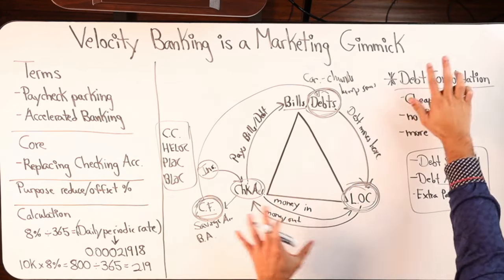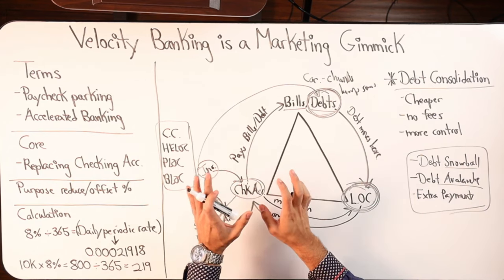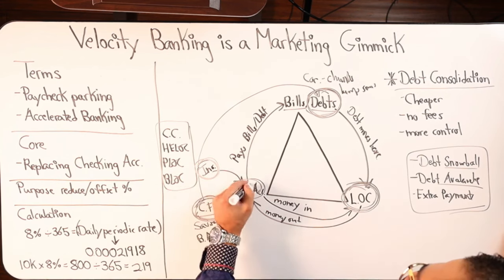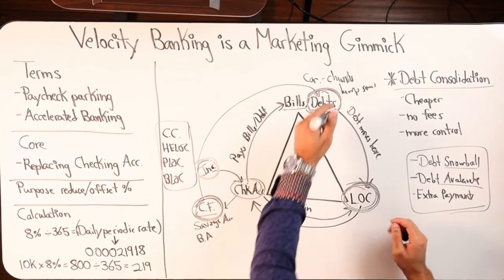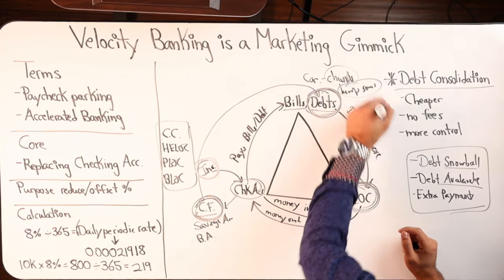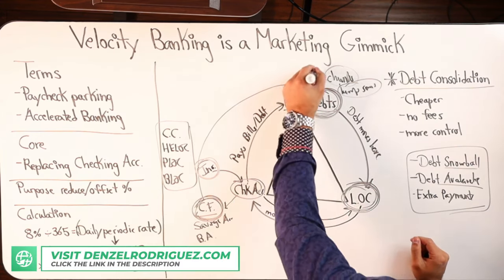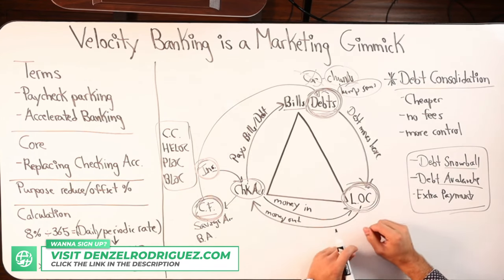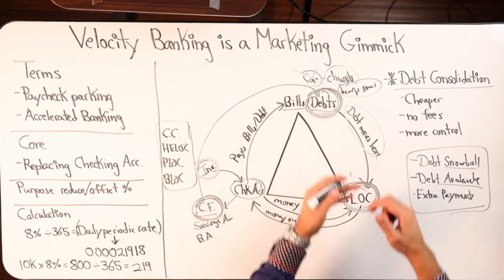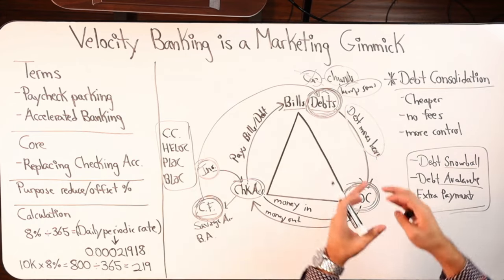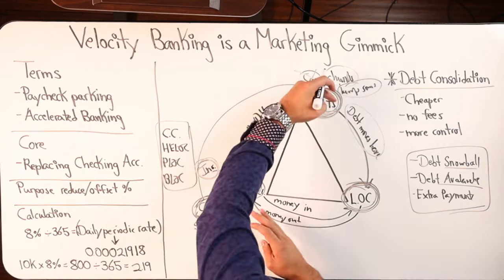Your line of credit replaces the checking account — you still keep the checking account because you need an account and routing number for your employer. Money comes out of the line of credit to make a chunk, or lump sum, payment to pay off a debt. For example, you literally pay off the car with the available credit limit of the line of credit. The car is paid off, you no longer owe that payment, but the debt has moved to the line of credit.